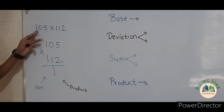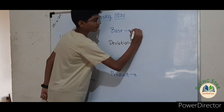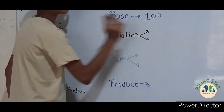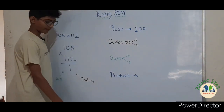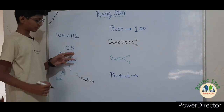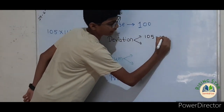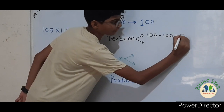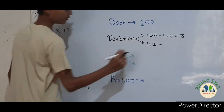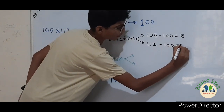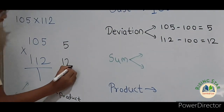First of all, let's find the base. One hundred and five and one hundred and twelve are near to hundred, so hundred will become the base. Now let us find the deviation — we have to subtract the base from the numbers. Therefore, one hundred and five minus hundred equals five, and one hundred and twelve minus hundred equals twelve. So write five here and twelve here.